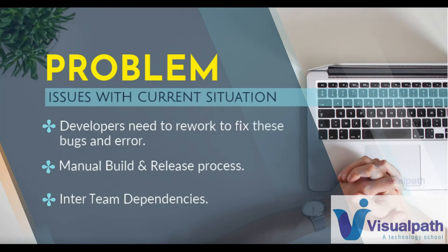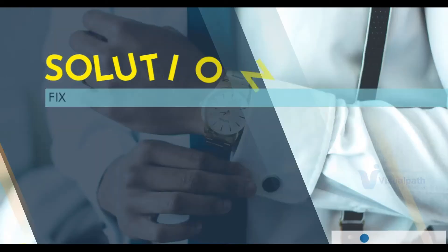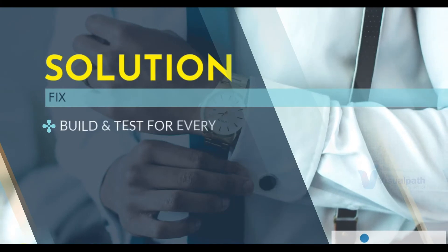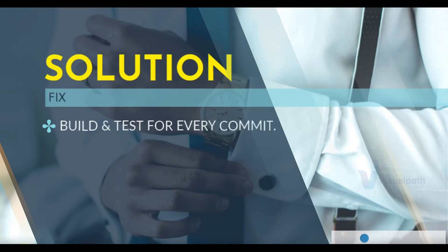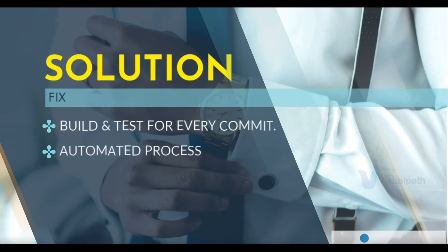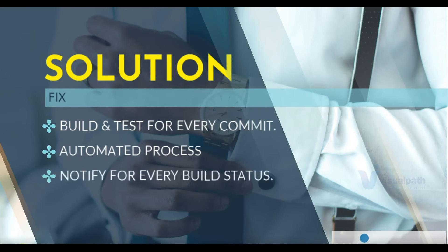Product owners really need to test the code as fast as it is building, but that's not possible because the build and release team is doing a manual process, and there are approvals and ticketing systems in place which delay the process further. The solution to this problem is regular build and test for every commit — as soon as there is a code change, the code needs to be built and tested at the same time. But if the process is manual, this will not be possible, so you need an automated build and release process.